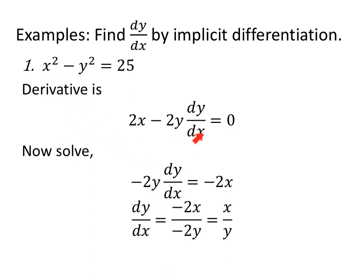Putting this back into equation form, we have 2x minus 2y dy/dx equals 0. I'm going to subtract 2x from both sides, then divide both sides by negative 2y. The negative 2s cancel and I get x over y. I like using dy/dx rather than y prime so I don't forget that it's a prime and not a 1. The dy/dx differential operator is a great reminder that I have to solve for it — I want dy/dx by itself on one side.